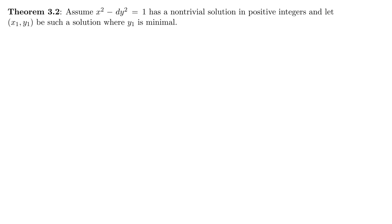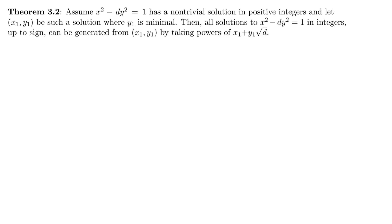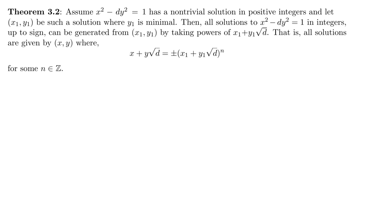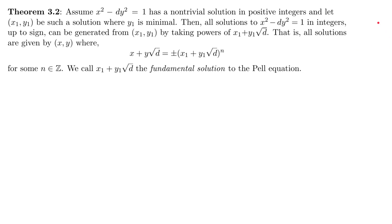Now the main theorem. Assume x squared minus dy squared equals 1 has a non-trivial solution in positive integers, and let x1, y1 be such a solution where y1 is minimal. Then all solutions to x squared minus dy squared equals 1 in integers can be generated from x1, y1 by taking powers of the quadratic surd with x1 and y1 as its coefficients. That is, all solutions are given by x, y where x plus y square root of d equals plus or minus x1 plus y1 square root of d to the n, where n is an integer. We call x1 plus y1 square root of d the fundamental solution, or sometimes the minimal solution.